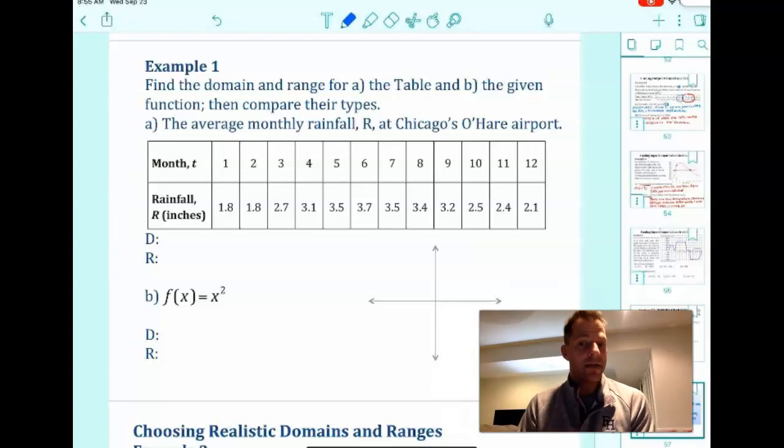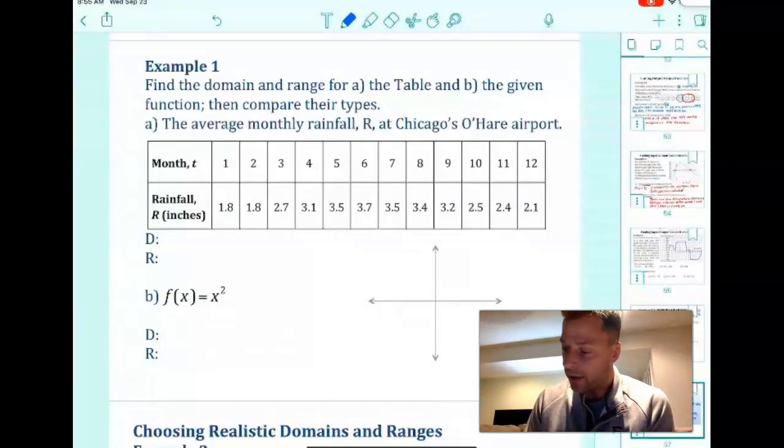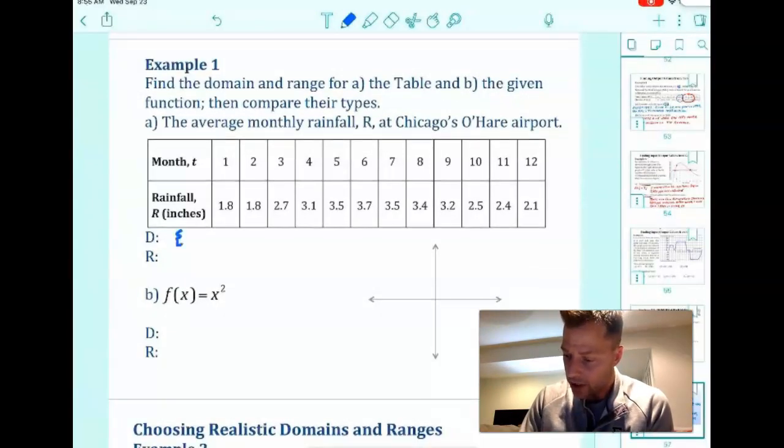So R is our dependent variable and month is our independent variable. Notice how they're listed, January all the way through December. So we're just going to list those in set builder notation 1 to 12. That's our domain. And we'll highlight that for you.